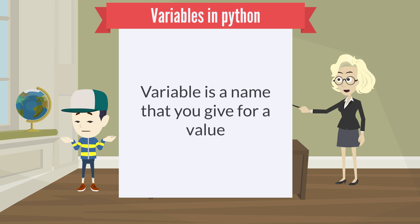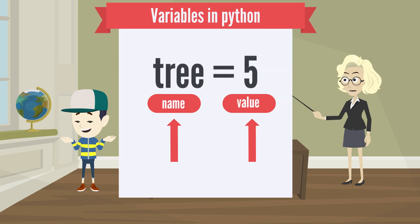Variable is a name that you give for a value. We can divide variable into two parts. One part is name, variable name, and one part is variable value. So to create a variable, you write the variable name, then an equal to symbol, followed by the variable value.